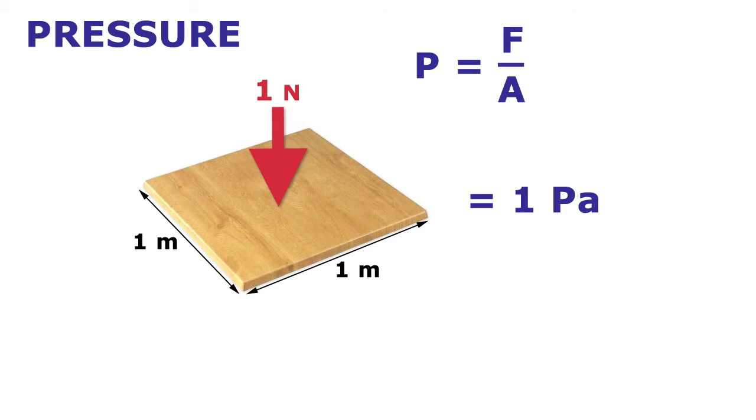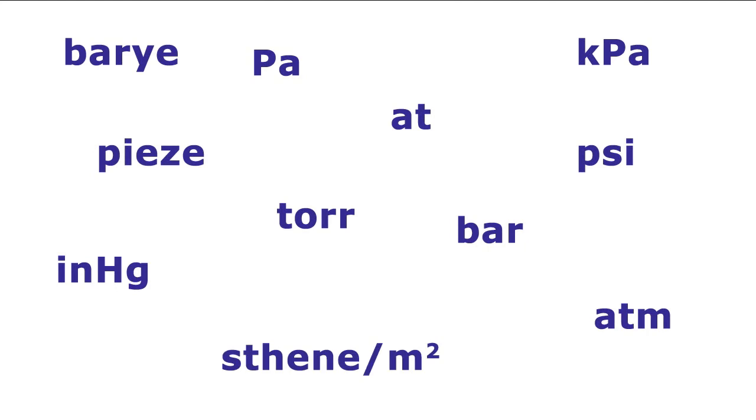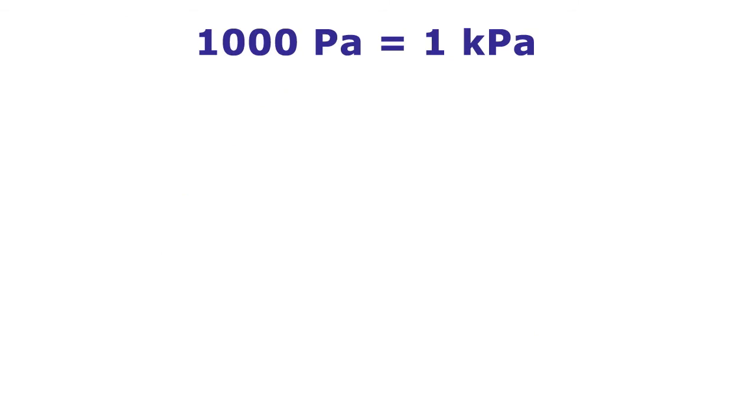So a pascal is a pretty easy to understand unit, but unfortunately there are many other units of pressure in use that can sometimes be confusing. The thing to keep in mind though is that they all describe the same thing, the force exerted on a particular area. For example, one of the most common units of pressure is the kilopascal, equal to 1000 pascals. It's used because the pascal is actually a very small unit of pressure, so the kilopascal is a bit more practical.